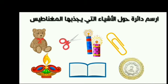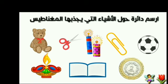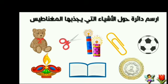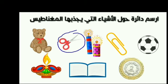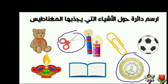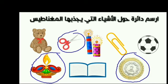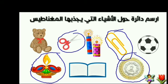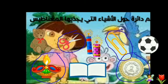Let us solve the exercises together. We have: a doll, a book, fireworks, a ruler, a paper clip, a lantern, coins, and a ball. The task is to draw a circle around the objects that a magnet attracts. The ruler — excellent. The coins — very good. The magic lantern. And finally the paper clip — excellent. Thank you all.